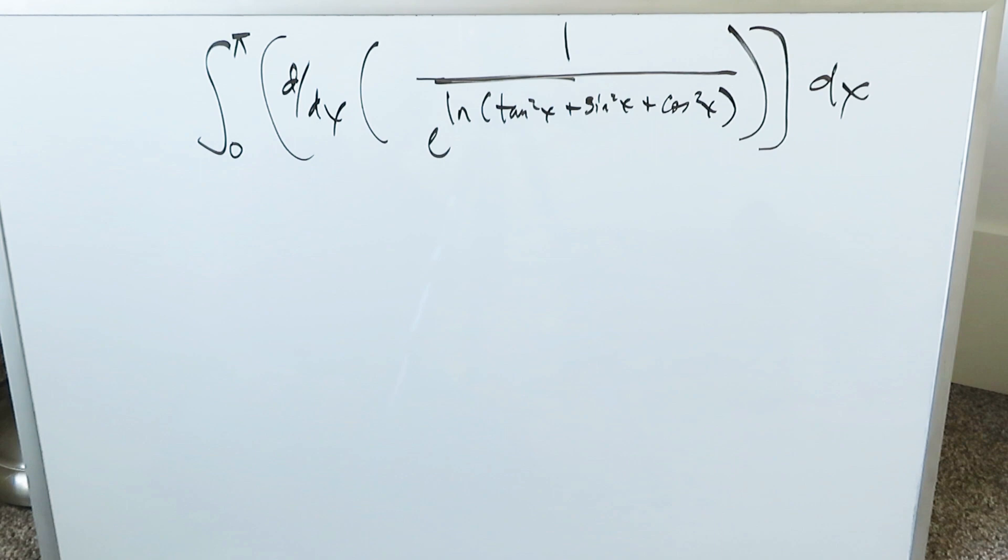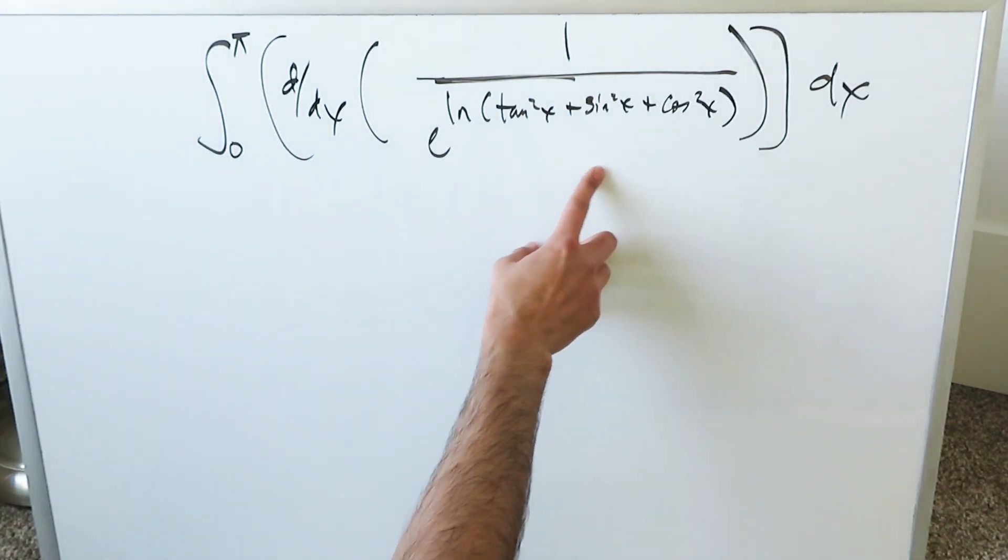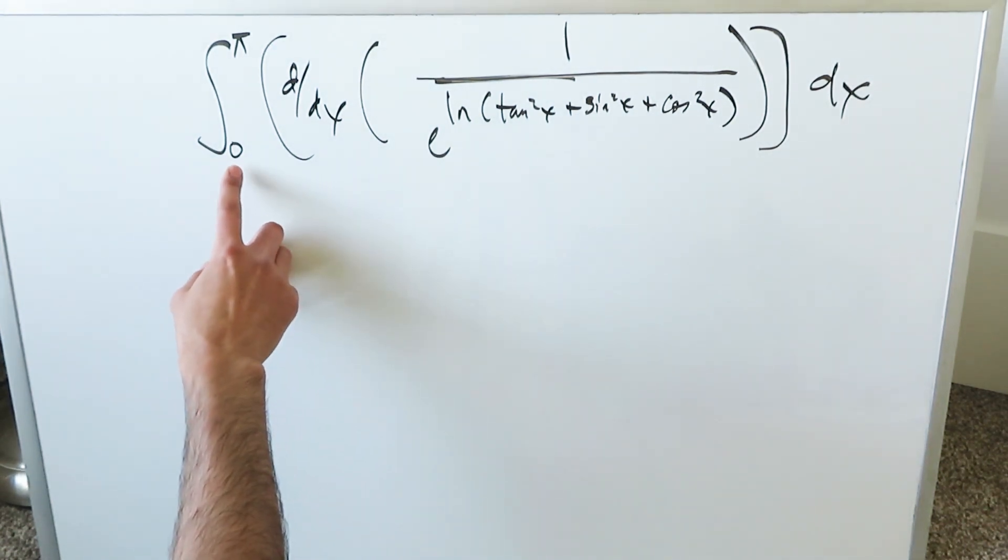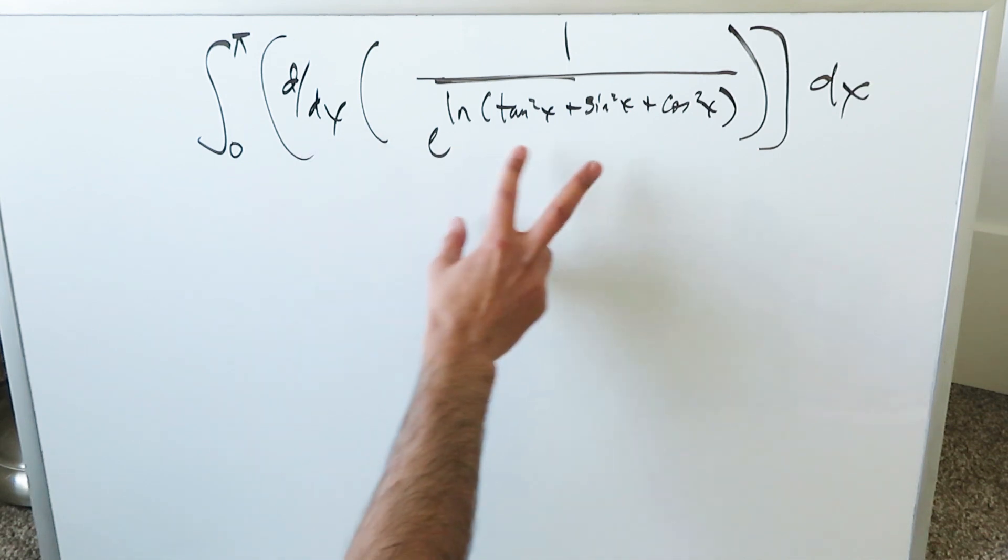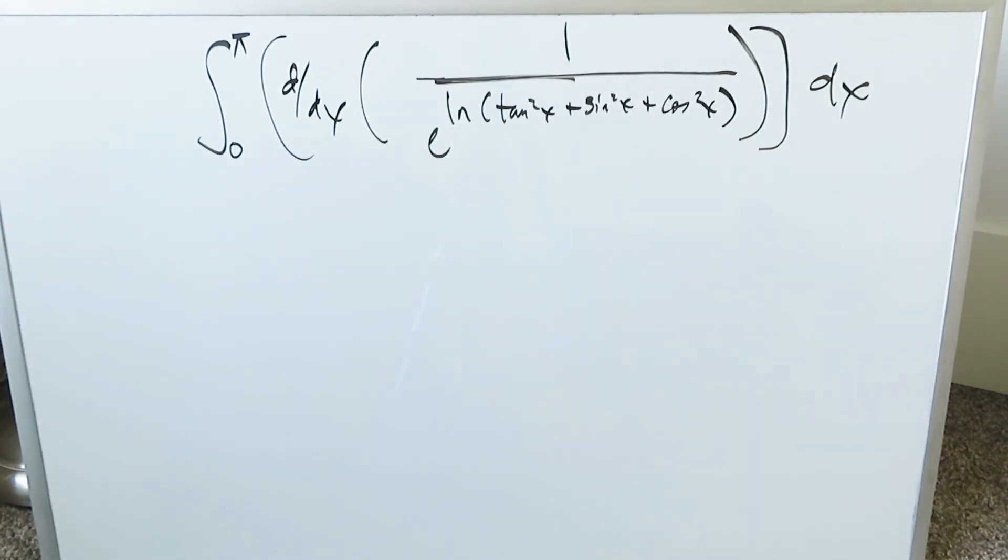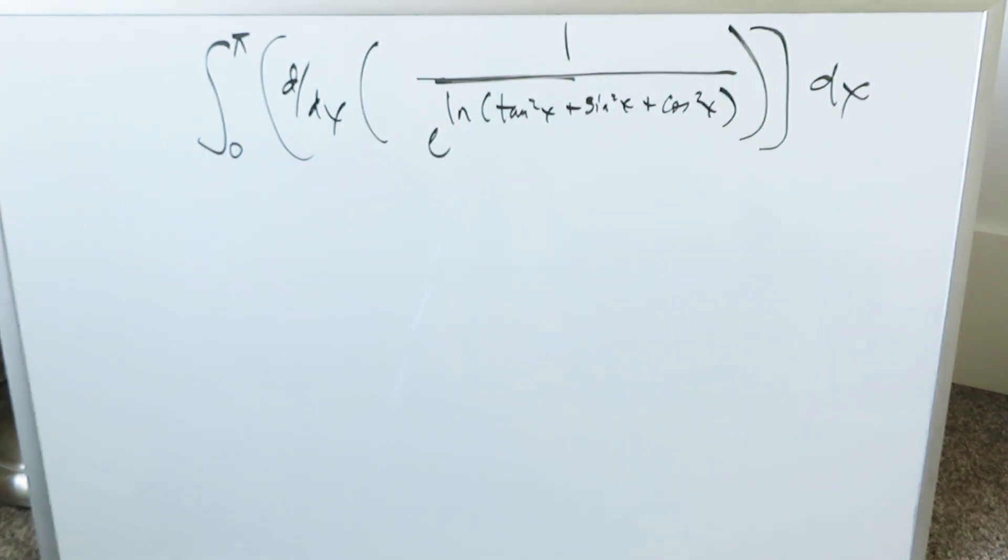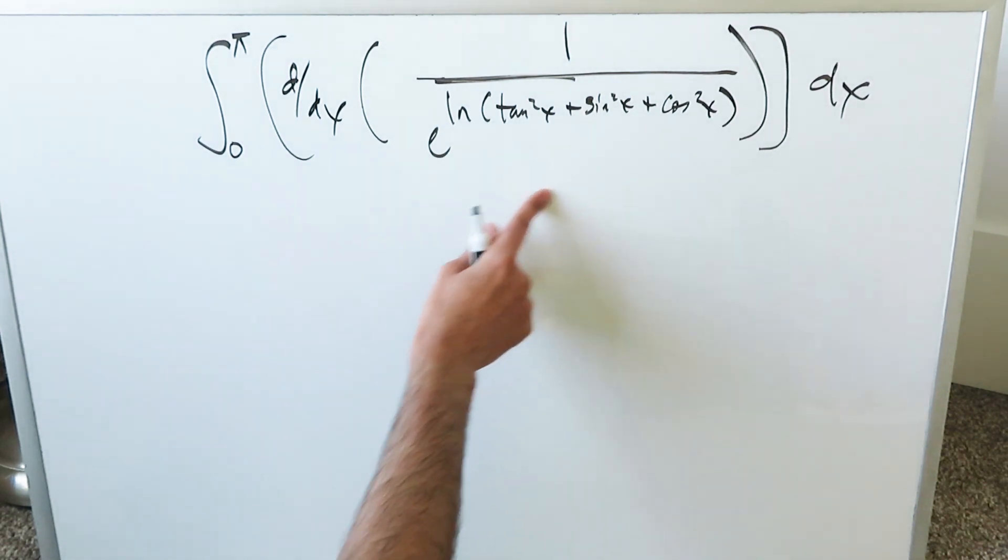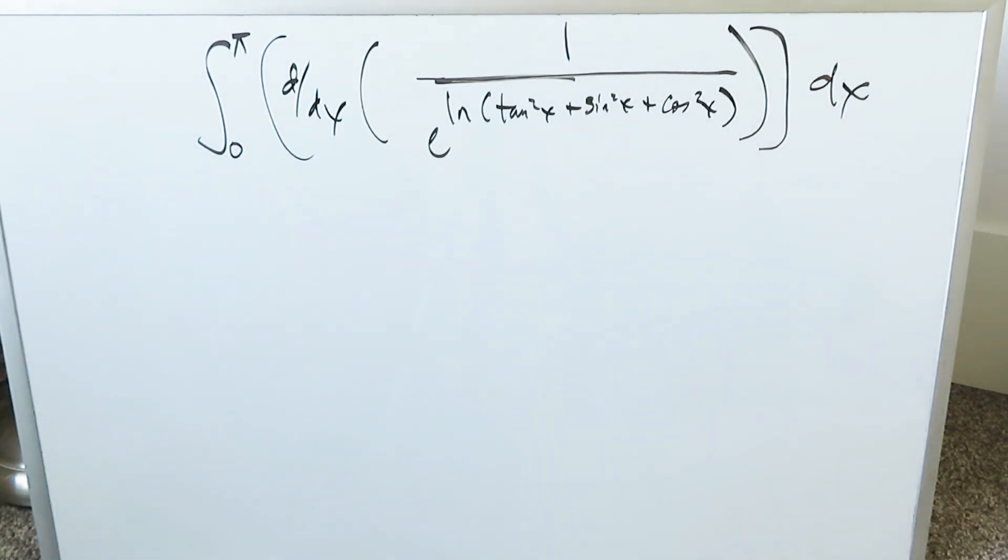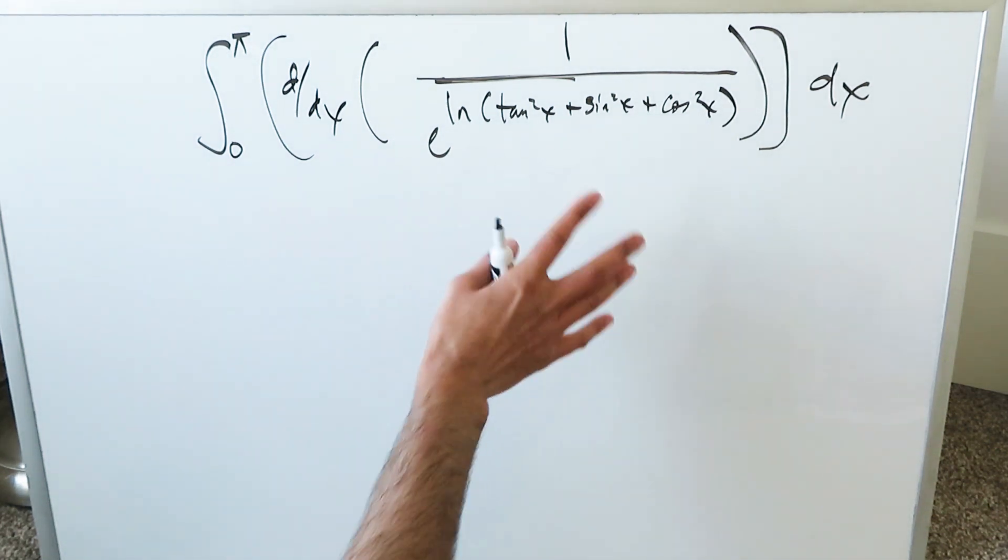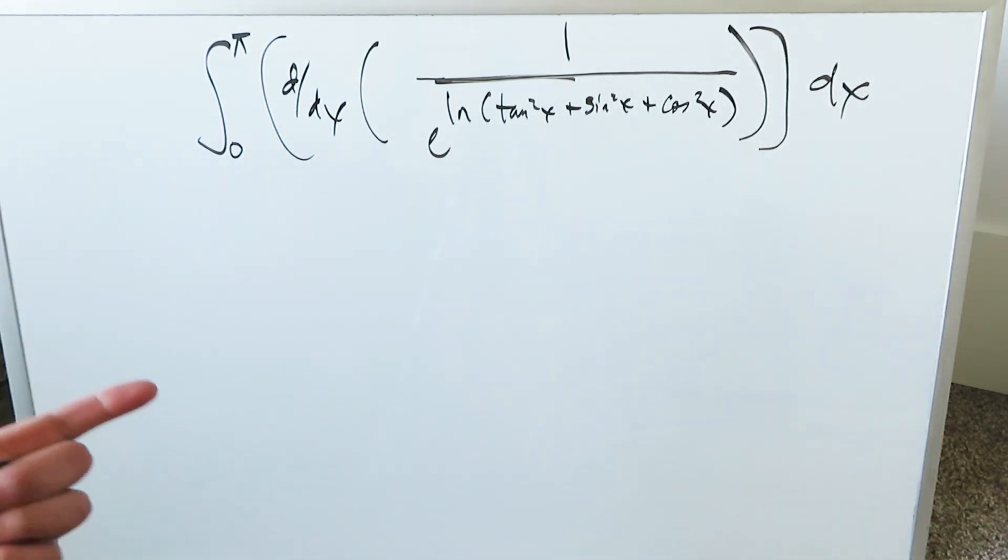We have to do the integral of this entire expression here. It's a definite integral from 0 to pi. The derivative of this expression: 1 divided by e exponent natural log tan square x plus sine square x plus cosine square x, all within that dx integral. Its derivative will then serve as the integrand of this definite integral. Start from the inside out. Everything will be here by means of many trigonometric identities to solve this out.